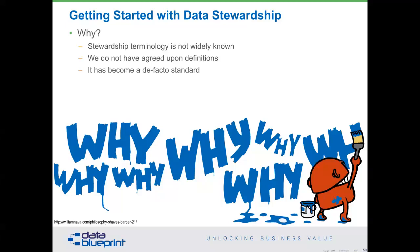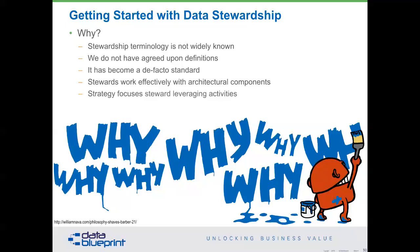It has, however, become a de facto standard to have people in charge of the data, and that seemed to be an argument that was pretty easy to make. Stewards work very effectively with architectural components and help us do a number of different things. The strategy focuses steward-leveraging activities — while there are lots of things we could do, which are the things that if we do them correctly and now will actually result in what we need?